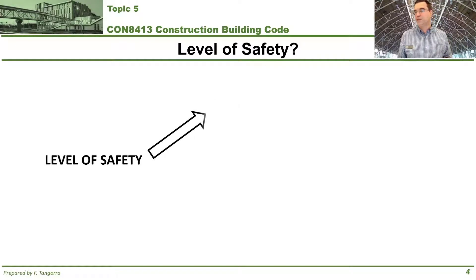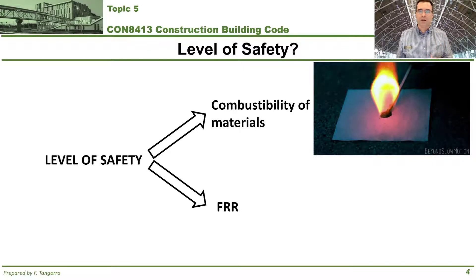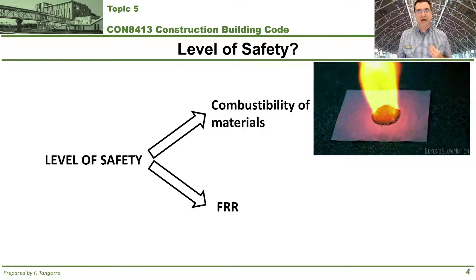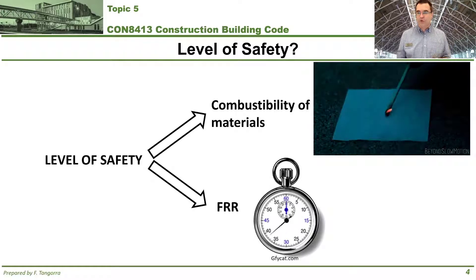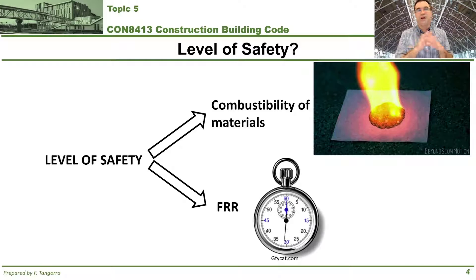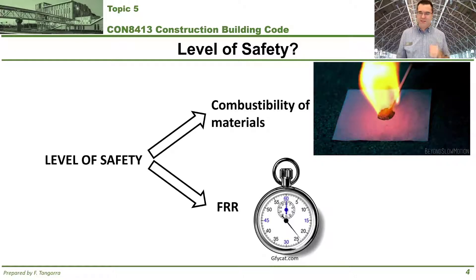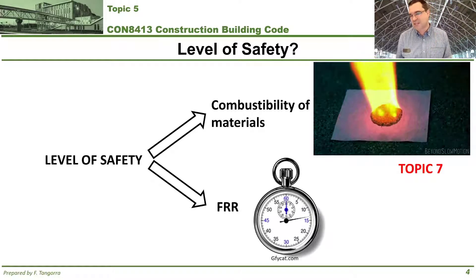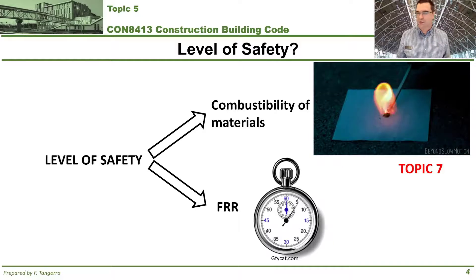When subsection 3.2.2 refers to level of safety from fire, the first concept is combustibility — how easily a construction material burns or does not burn. The second concept is the fire resistance rating, or FRR, which refers to an amount of time in minutes or hours assigned as a level of safety to a material, regardless of how well it burns. This topic is covered in more detail under topic 7.